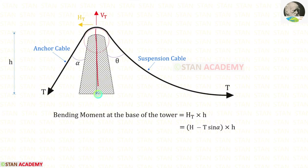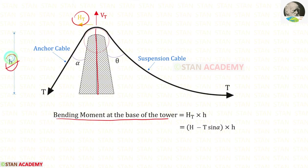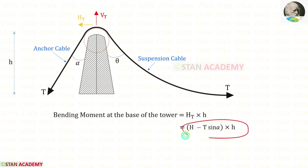Let us keep the height of the tower as h. Now we can find the bending moment at the base of the tower. For that we have to multiply the horizontal force with the height. We have already made the expression for Ht, so let us apply that. This is the expression for the bending moment at the base of the tower.